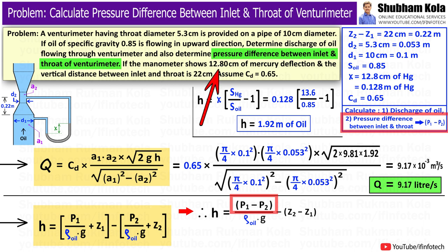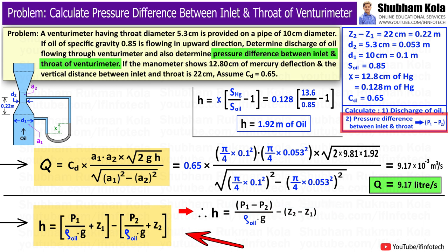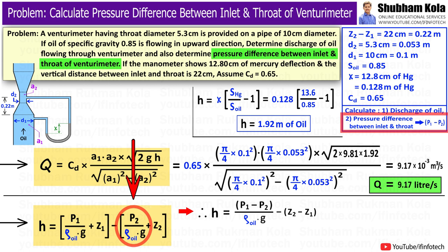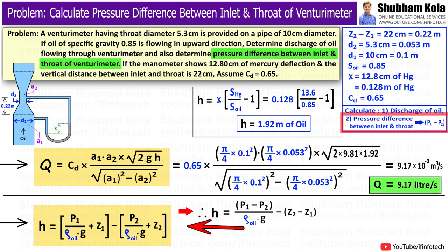Now we need to calculate the pressure difference between inlet and throat, i.e. p1 minus p2, using the small h formula. Small h equals the pressure head at section 1 (p1 over ρg) plus potential head z1, minus the pressure head at section 2 (p2 over ρg) plus potential head z2. After simplifying, small h equals (p1 minus p2) over ρg, minus (z2 minus z1).